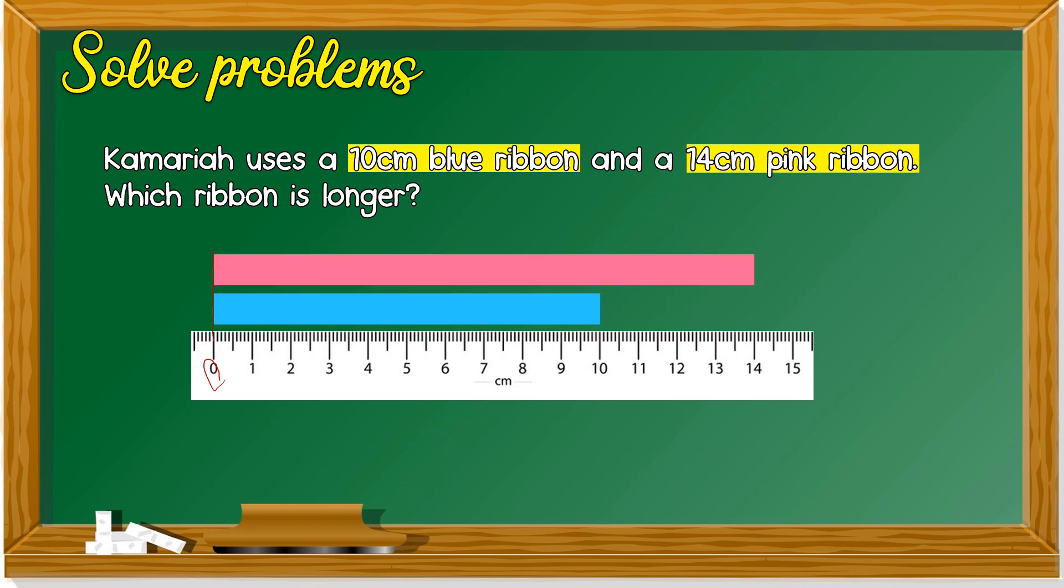Remember, when you measure, must start from 0, align with 0 cm from the ruler. So which ribbon is longer? It's the pink ribbon.